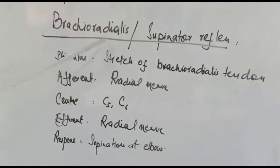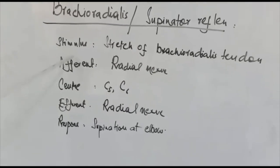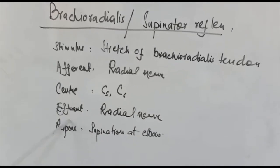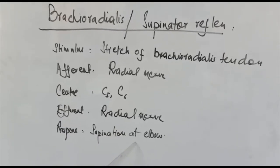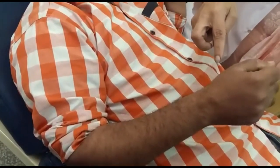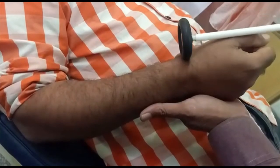The next reflex is the brachioradialis reflex or supinator reflex. The stimulus is stretch of the brachioradialis tendon, the afferent is the radial nerve, the center is C5 and C6, and the efferent is the radial nerve. The response is supination at the elbow. For this reflex, we place the subject's arm at right angle with the forearm midway between pronation and supination, support the wrist, and strike the styloid process of the radius with the clinical hammer. The result is supination at the elbow due to contraction of the brachioradialis.